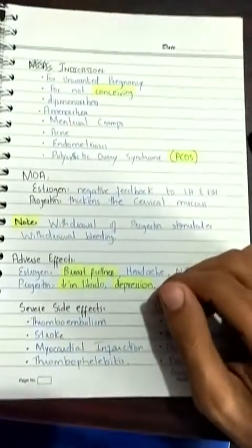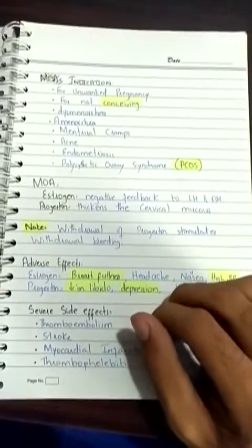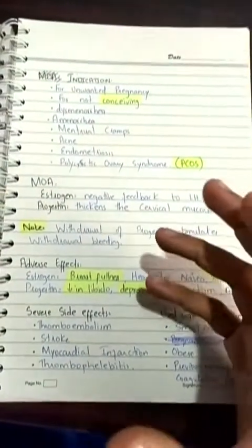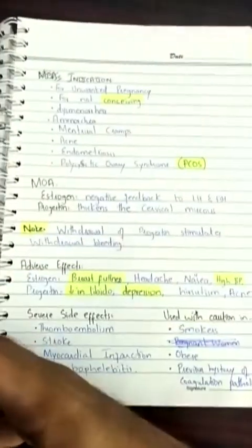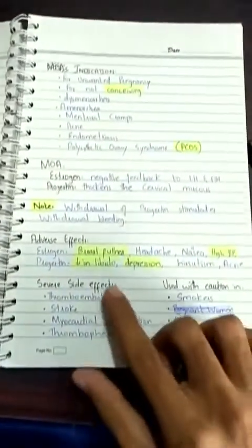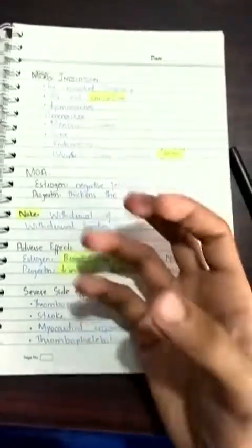A special note: withdrawal of progestin stimulates withdrawal bleeding. The major responsible factor for withdrawal bleeding during the placebo period is the absence of progestin in the body. Regarding adverse effects of estrogen and progestin, there are many, but the common ones include breast fullness, headache, nausea, and high blood pressure from estrogen.